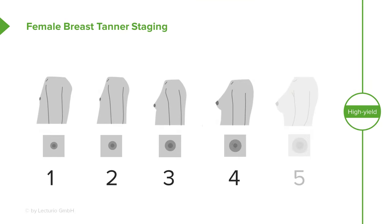Mound on mound typically happens around 11 and a half to 13. Then the breast continues to grow further, the areola darkens a bit, and this typically happens around age 13 to 15. After 15, we typically expect the fully developed breast, which is Tanner 5.